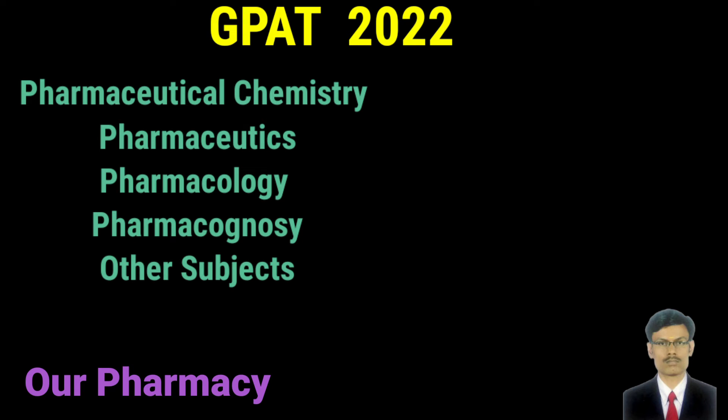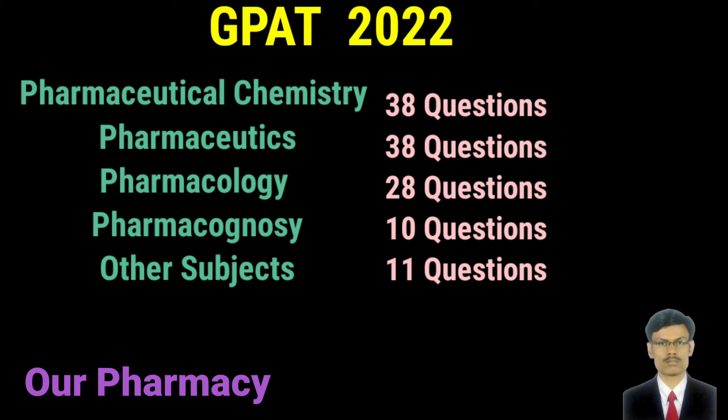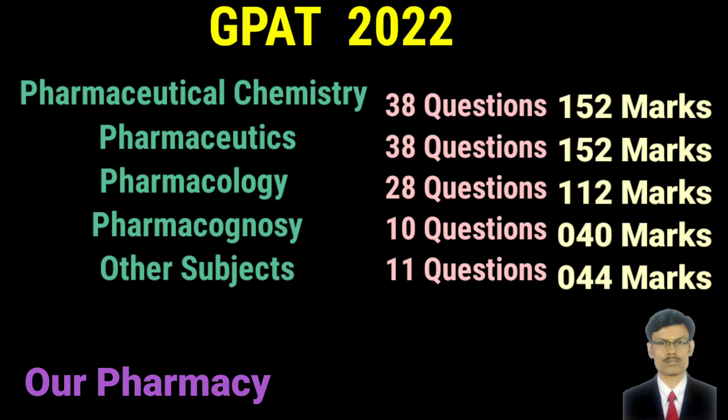Now we can look at the core subject-wise marks and questions. First, Pharmaceutical Chemistry: 38 questions will be asked, four marks per correct answer, total marks from Pharmaceutical Chemistry: 152. Similarly, Pharmaceutics: 38 questions, 152 marks.